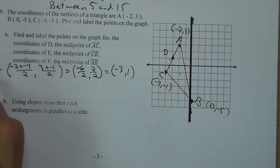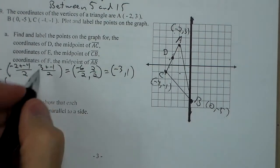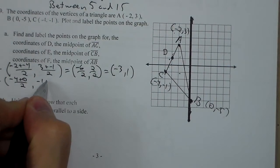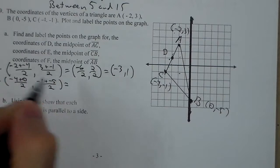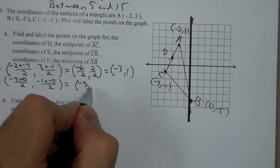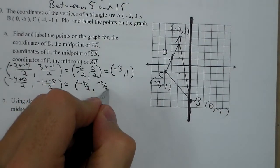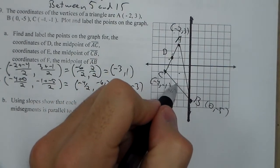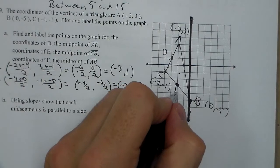Let's look at E. It's going to be between C and B, these two points. So I'm going to do negative 4 plus 0 over 2, negative 1 plus negative 5 over 2. This gives me negative 4 over 2, and negative 6 over 2. So that's a negative 2, negative 3. We check that, negative 2, negative 3 is our point E.